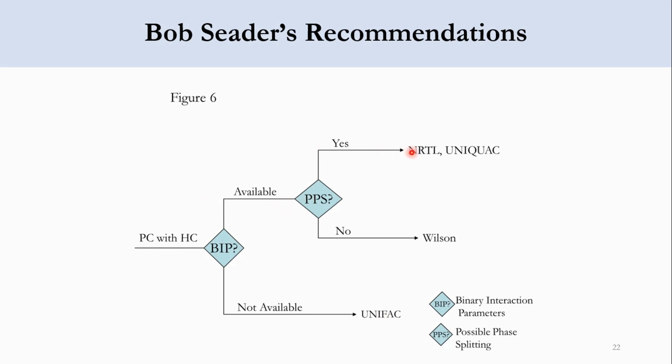If phase splitting is yes, use NRTL and UNIQUAC. If no, use Wilson. You can see that there are different classifications and different parameters for selection of different property packages. Both Eric Carlson's recommendation and Bob Seader's recommendations can be used to select the suitable property package in the system.